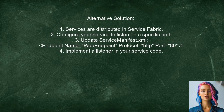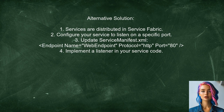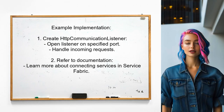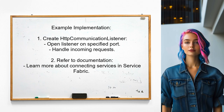This user suggests understanding that in Service Fabric, services are not tied to a specific machine — they can be distributed across multiple virtual machines. To trigger the get accounts endpoint, you need to configure your service to listen on a specific port, like port 80. This involves updating the service manifest.xml to define the endpoint and implementing a listener in your service code. You can create an HTTP communication listener that opens a listener on the specified port, which will handle incoming requests and publish the service's URI. For more detailed guidance, refer to the documentation on connecting and communicating with services in Service Fabric.